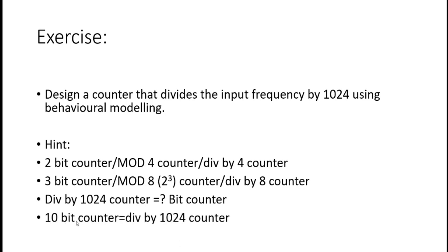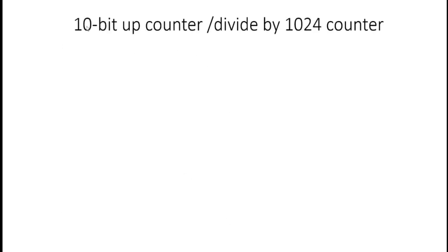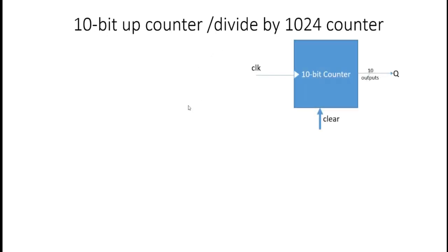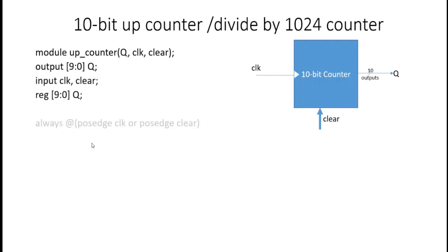So we need to design a 10-bit up counter. Compared to the 4-bit up counter designed earlier, the only change is to update the vector size to 10 bits. By making this minor change in the program you can have your divide-by-1024 counter.